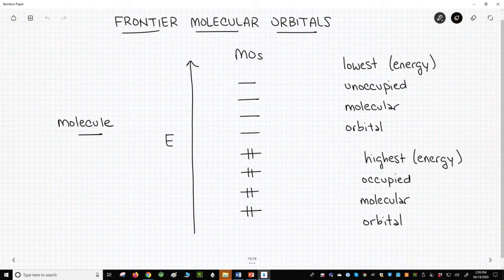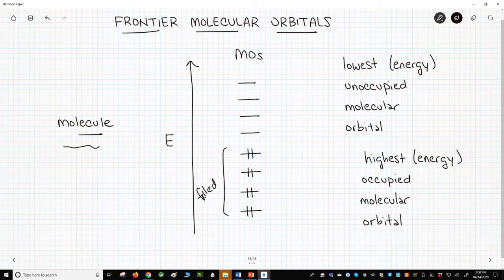Here is the MO diagram for a typical molecule. On this energy axis, the molecule has any number of orbitals – eight in this example. Some are filled or occupied. Others are empty, vacant, or unoccupied.